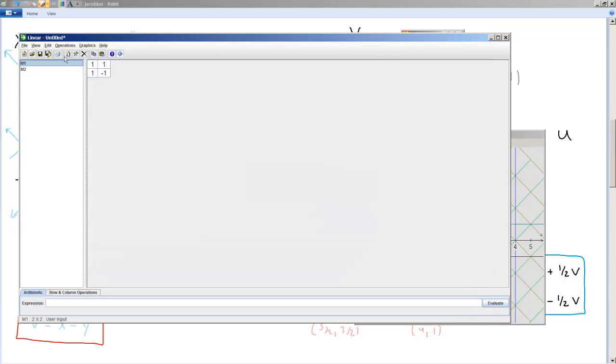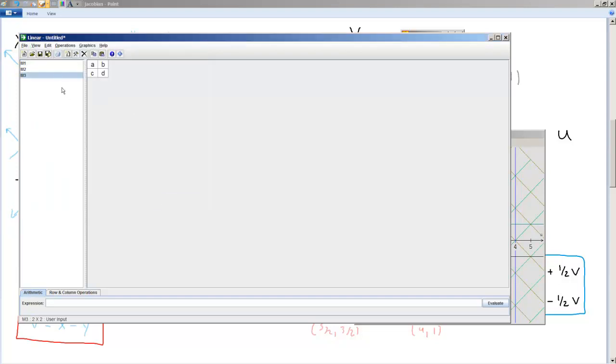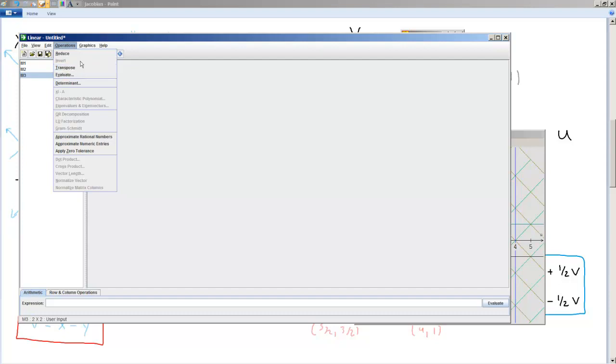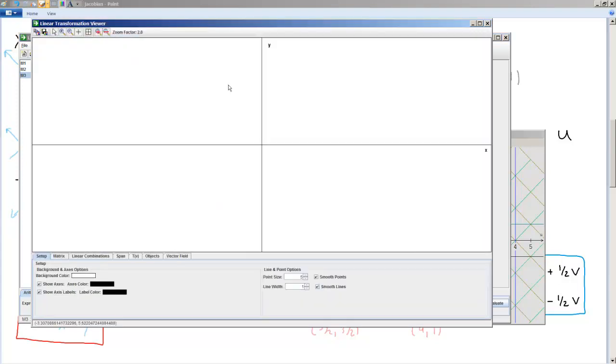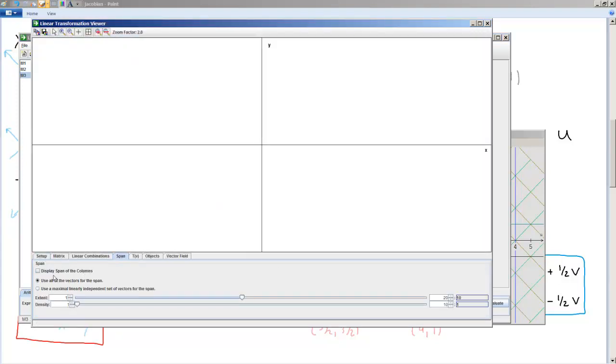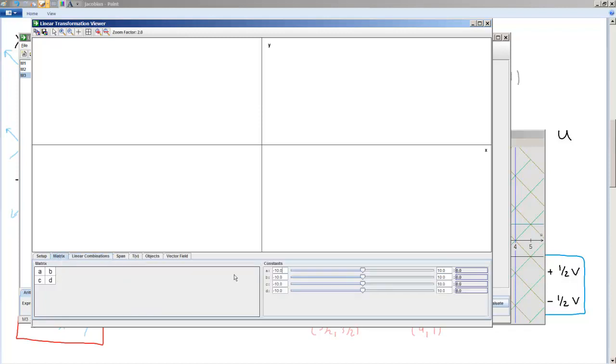Now if I close this and I create a new matrix 2x2: A, B, C, D. Linear is pretty nice. I can actually go to Linear Transformation for A, B, C, D. And I can view the span of the columns. That's interesting. Oh, right. I have to go to my matrix. Everything is set to zero. Go to my matrix tab.